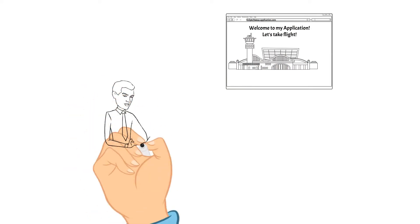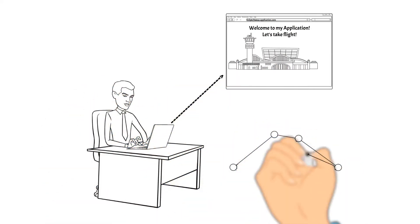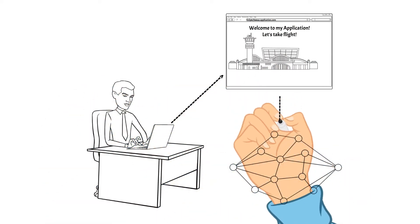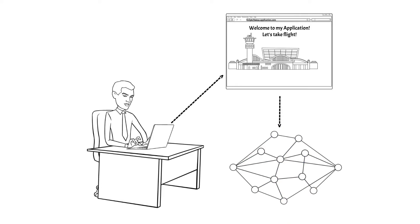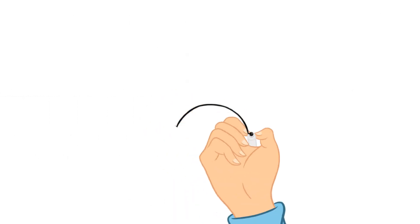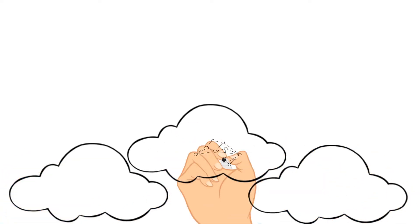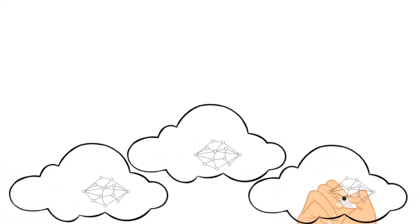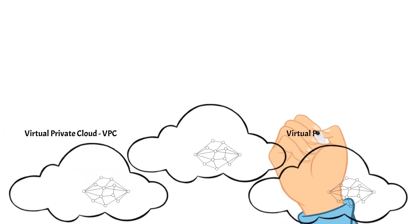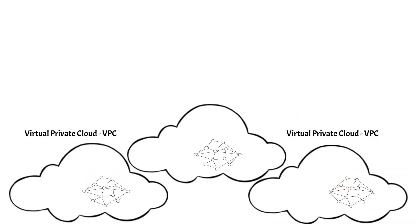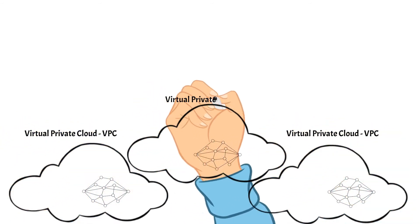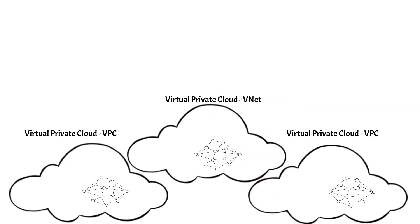For a client to connect to an application, there needs to be a network created for the application to be configured on. There are multiple cloud providers that all have different terminology for their networking and security objects. A couple of cloud providers call their virtual private cloud a VPC, and another cloud provider calls it a VNet — and that is just for the cloud name object.